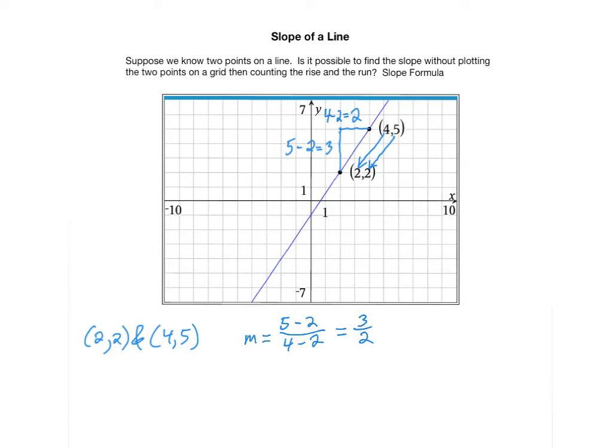This is true in general. If you have any two points, let's call one, x1, y1, and call the other one, x2, y2. The slope, m, is the difference in the y values, or the rise between the two points, which is y2 minus y1, over the distance between the x values, which is x2 minus x1.